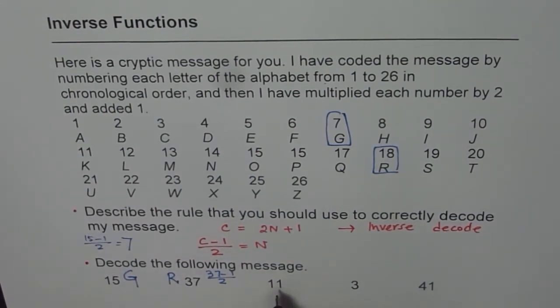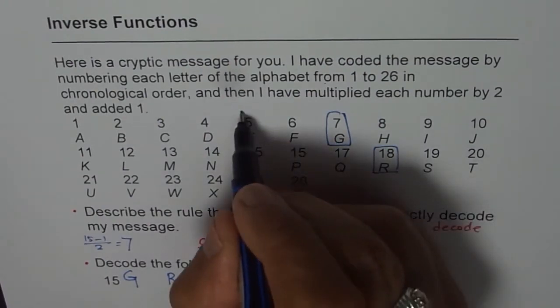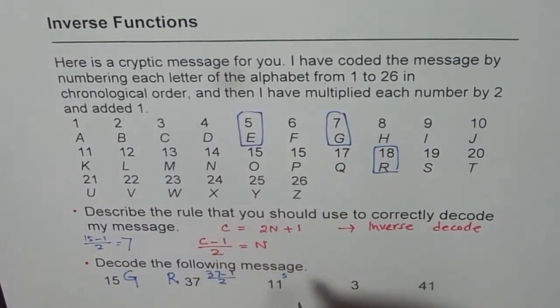For 11, 1 less than 11 is 10. 10 divided by 2 is 5, and the letter is E.